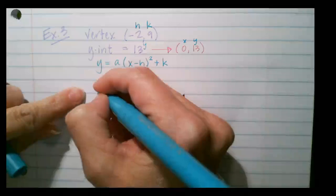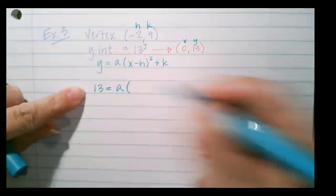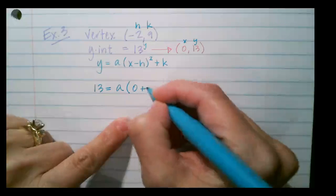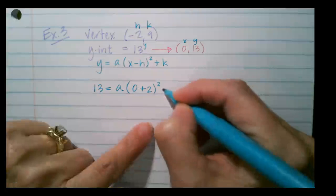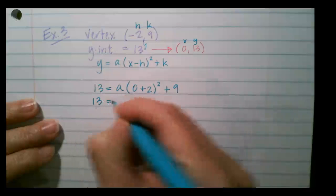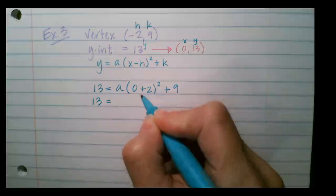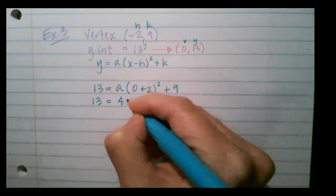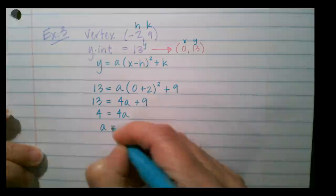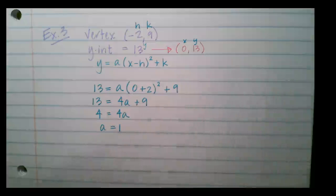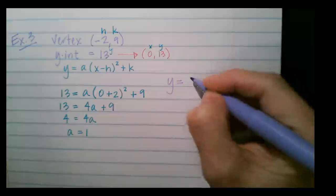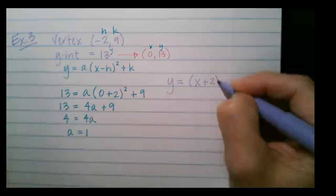Now I know x is 0 and y is 13. Filling in: 13 equals a times (0 minus negative 2)² plus 9. That's (0 plus 2)² which is 4, so 13 equals 4a plus 9. Subtracting 9 gives 4 equals 4a, so a equals 1.